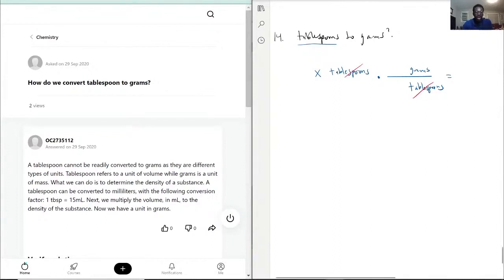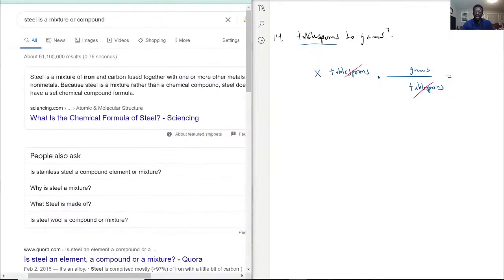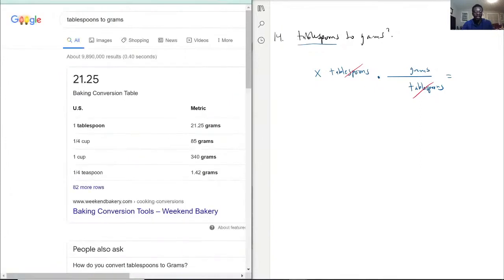So now, for this, turns out tablespoons is actually a liquid measurement. So you can actually search it up here, although I wouldn't trust this because usually it refers to like water, but if I said tablespoons to grams. It says 21.25 grams. Well, that's like baking conversion table.